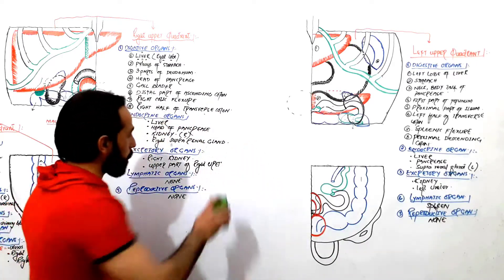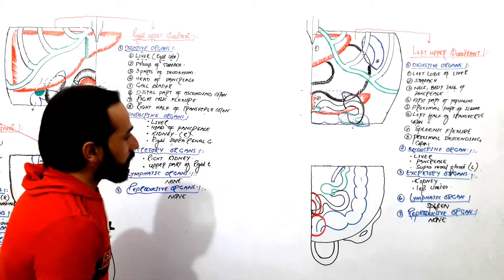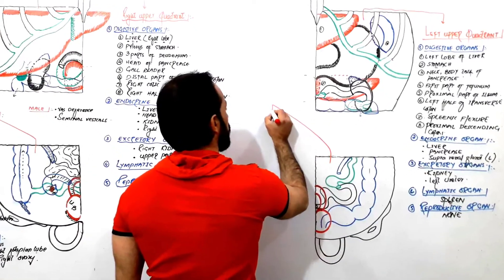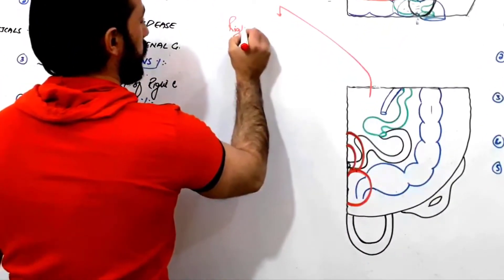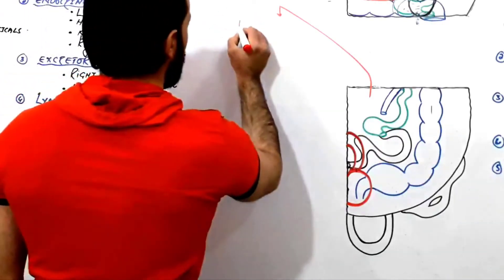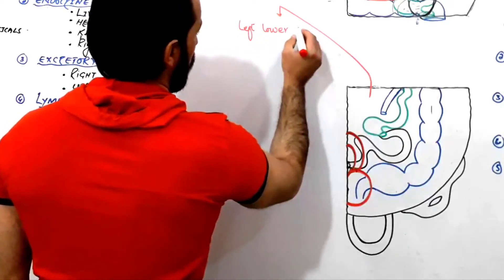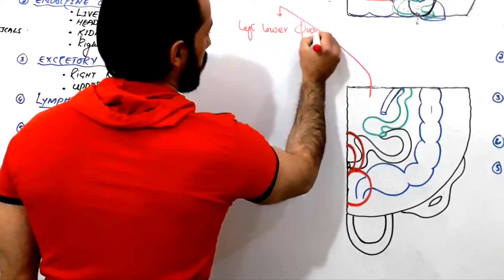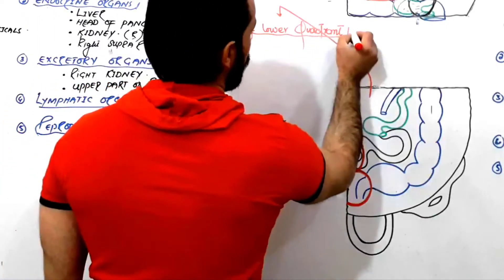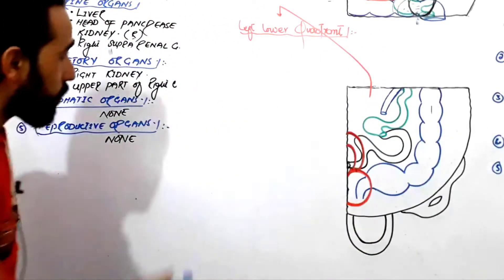So let's discuss the left lower quadrant of the abdominal cavity. Let's learn about the organs which are present there.